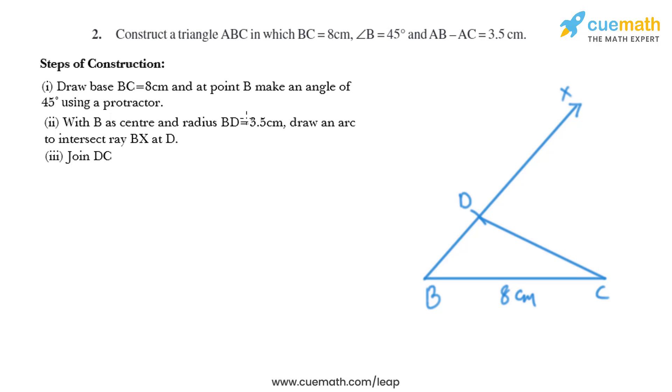In the next step we just need to join D and C. Now with D and C as the centers and radius greater than half of DC, draw arcs above and below the line to intersect BX at A.